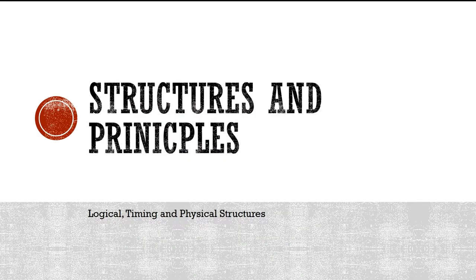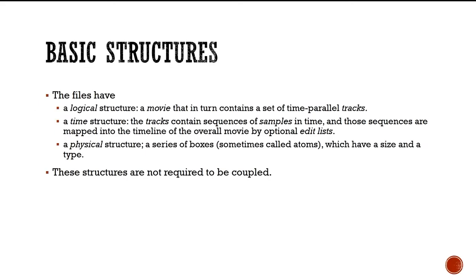Looking at structures and principles — the file format editor Dave Singer is very keen that people understand the structure and principles. Files have three types of structure: a logical structure where a file stores a movie containing several time-parallel tracks; a time structure where tracks contain sequences, each with samples mapped to an overall timeline for synchronization; and a physical structure built on a series of boxes — also called atoms — each having a size and a type.